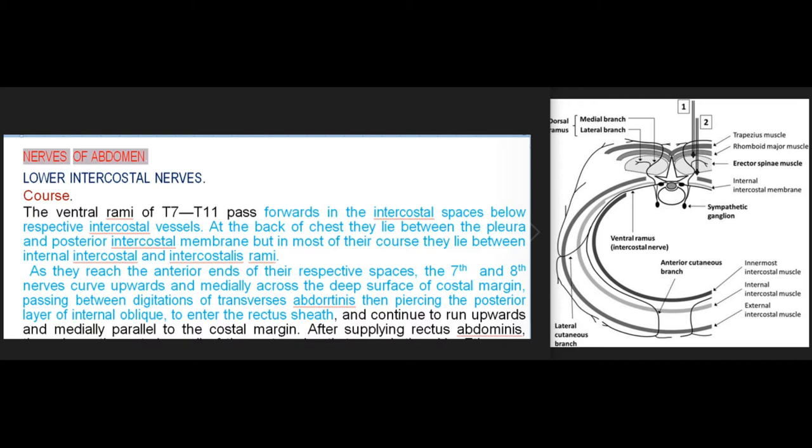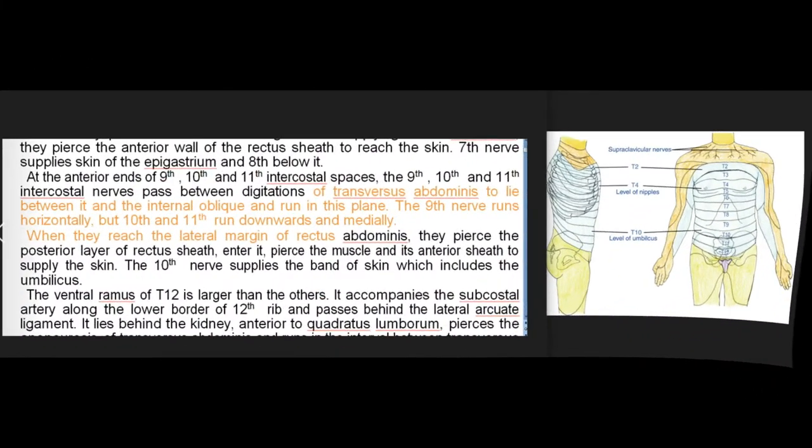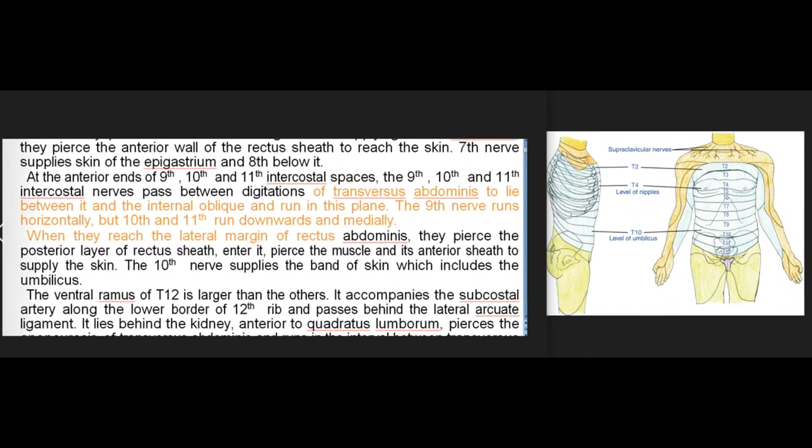As they reach the anterior ends of their respective spaces, the 7th and 8th nerves curve upwards and medially across the deep surface of the costal margin, passing between digitations of transversus abdominis, then piercing the posterior layer of internal oblique to enter the rectus sheath, and continue to run upwards and medially parallel to the costal margin. After supplying rectus abdominis, they pierce the anterior wall of the rectus sheath to reach the skin.